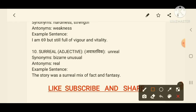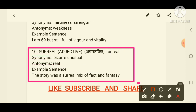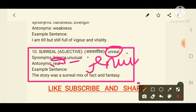Now we move to the tenth and final word: 'surreal'. Surreal means unreal or imaginary — something which is not real. You can use 'imaginary' as a synonym, because what is unreal is imaginary. Synonyms include unreal, imaginary, bizarre, and unusual. The antonym is 'real' or 'genuine'. Example: 'The story was a surreal mix of fact and fantasy.'